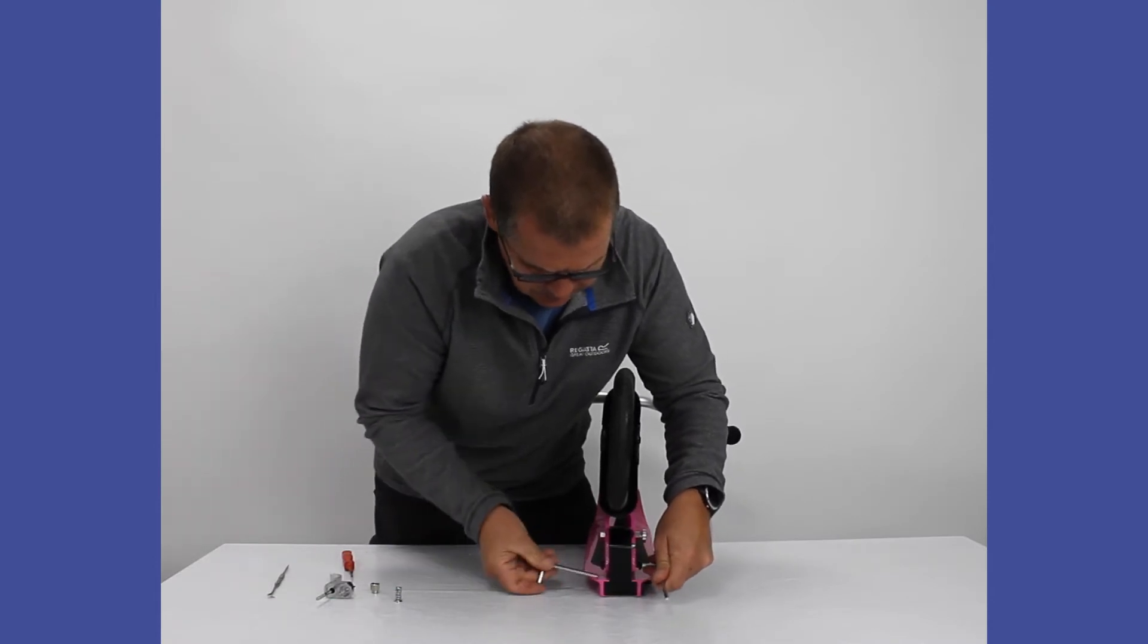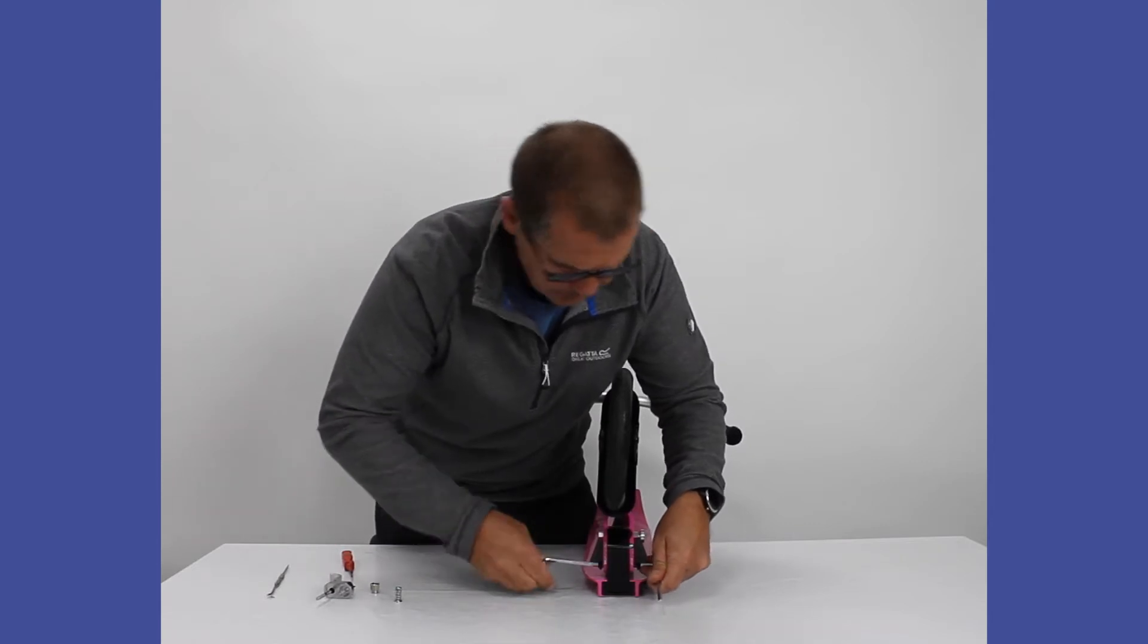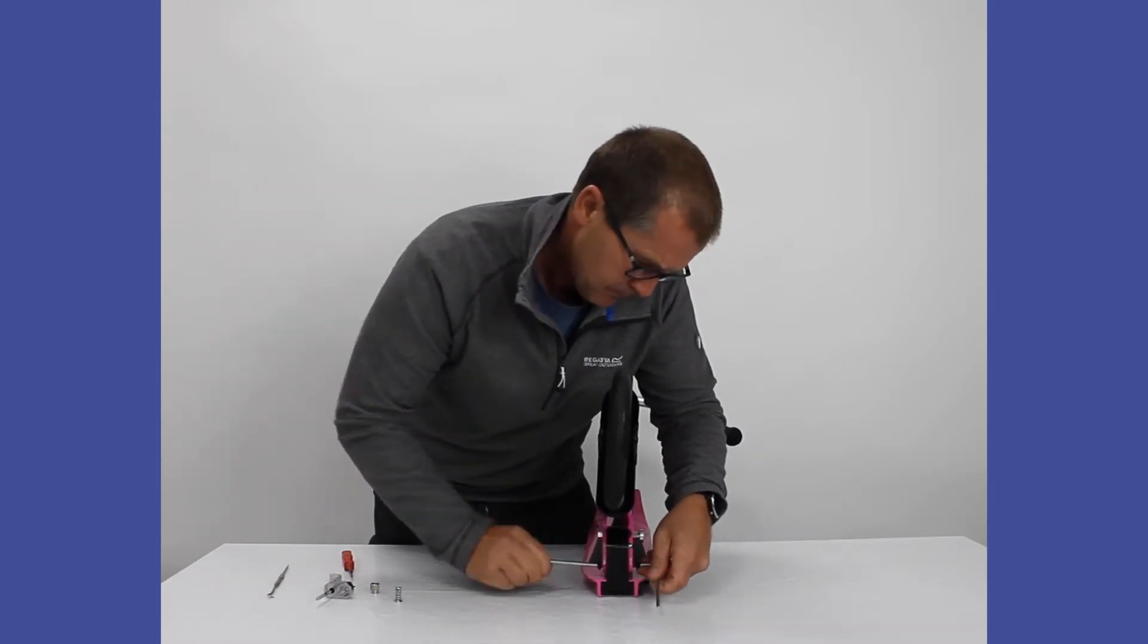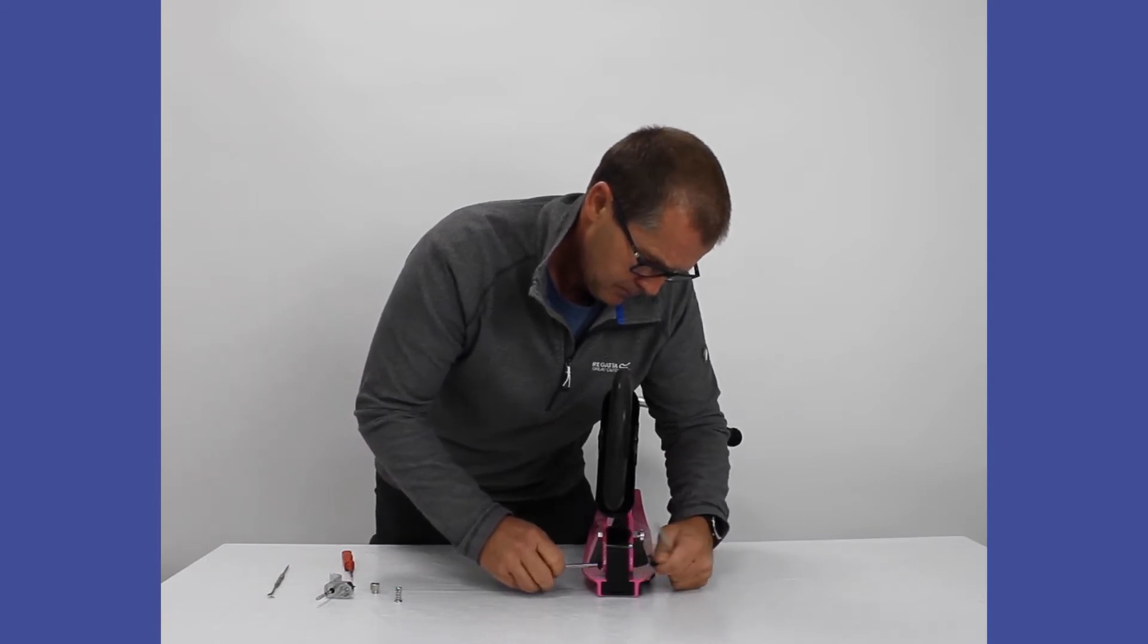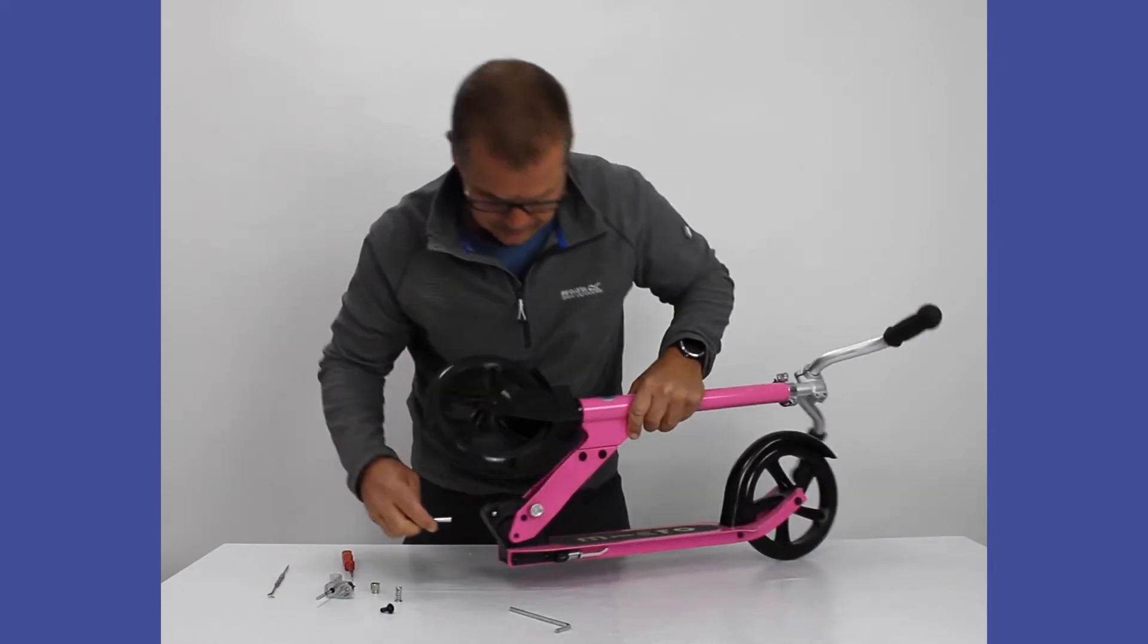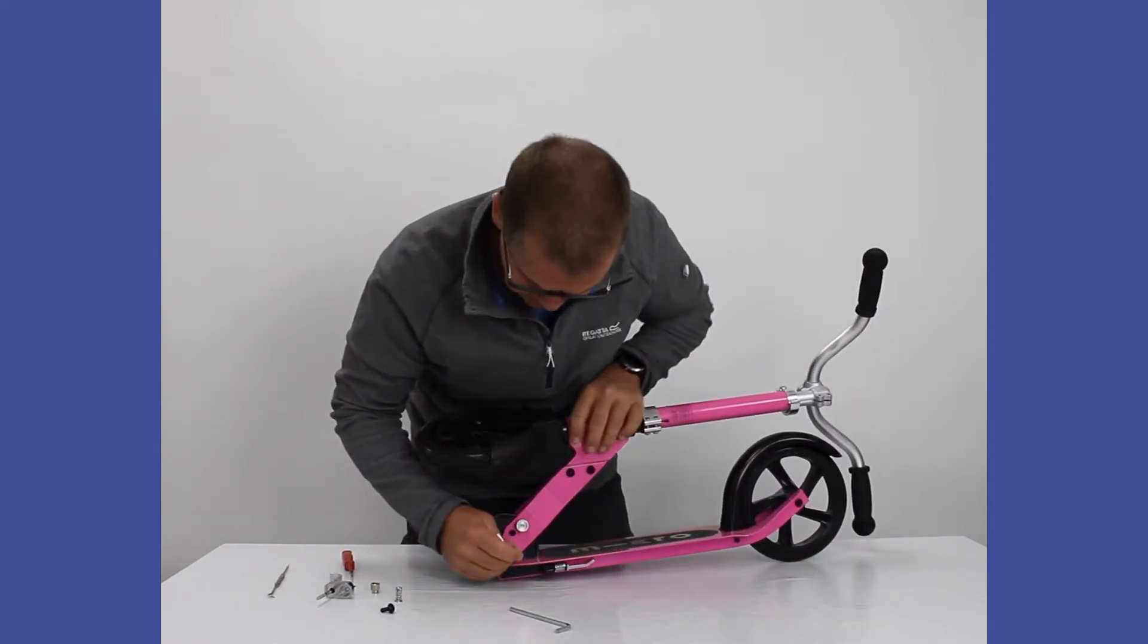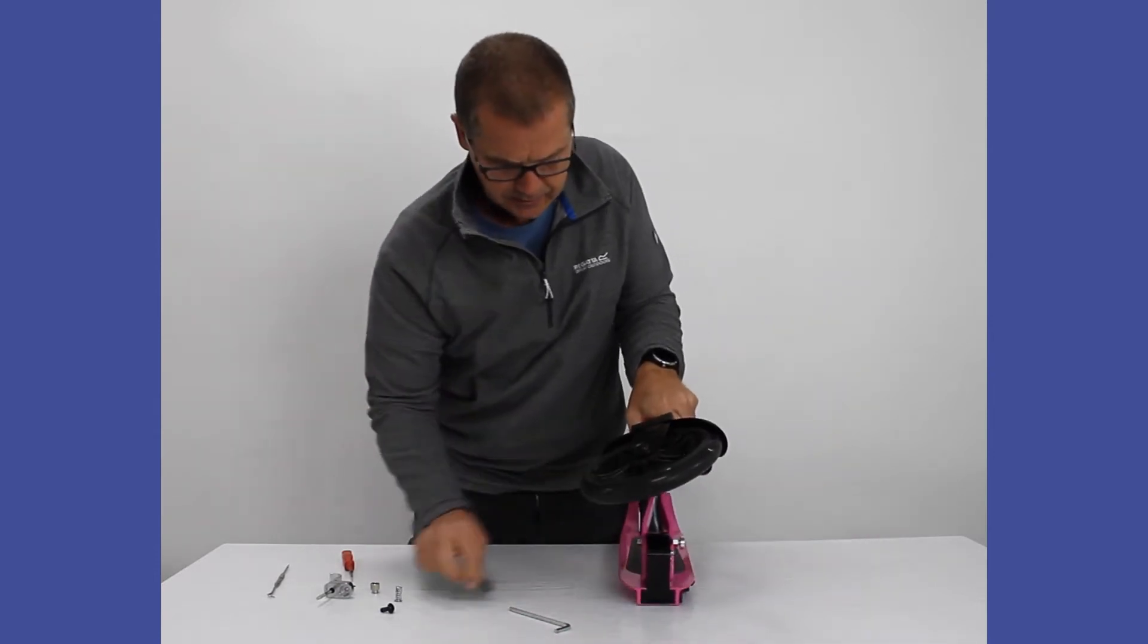It'll be a little bit stiff because of the lock part that's on the thread. There we go, that's one half of it. And then what I normally do is use the allen key and just push through to this side, and then the other one comes out the other side here.